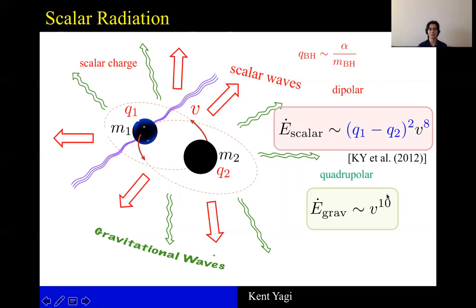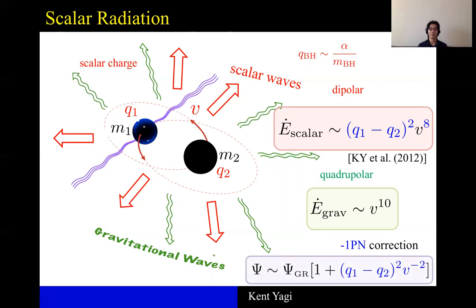If we take the ratio between these two, then you can roughly derive the fractional correction to the waveform phase, which again is dependent on the difference in the scalar charges and also proportional to velocity to the minus two, which means that this correction enters at minus one pE order relative to GR.